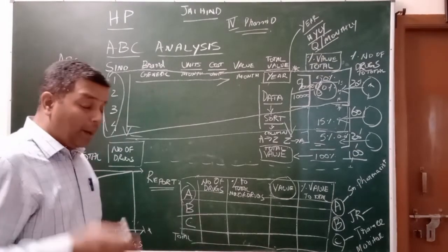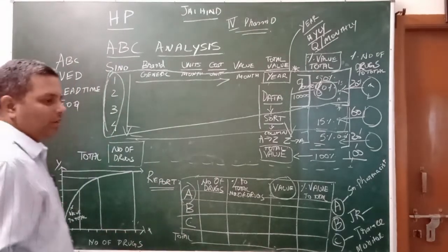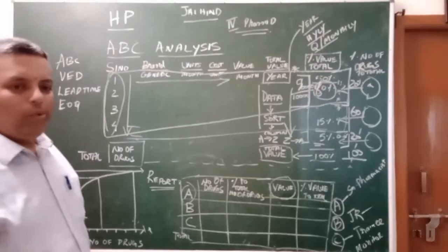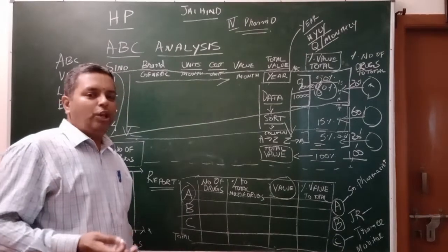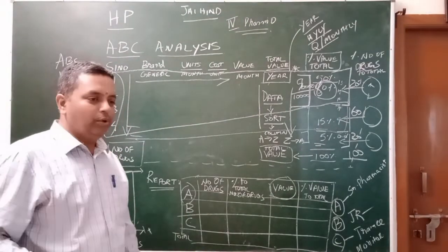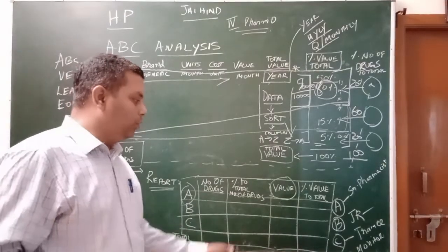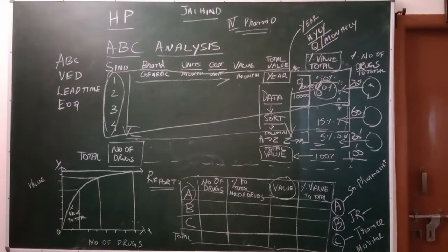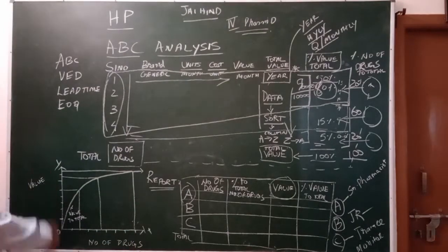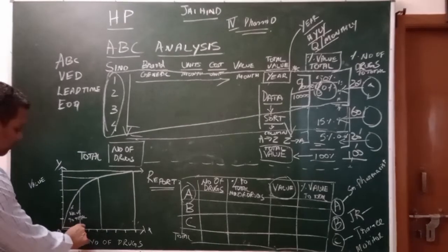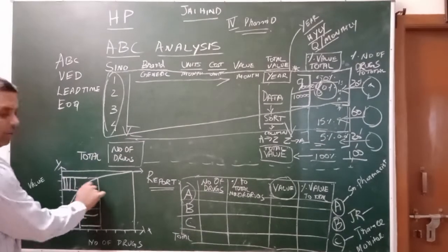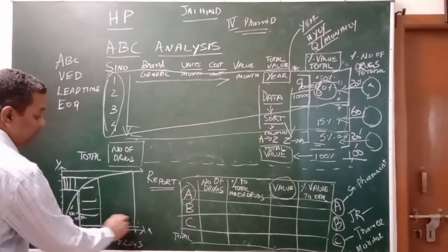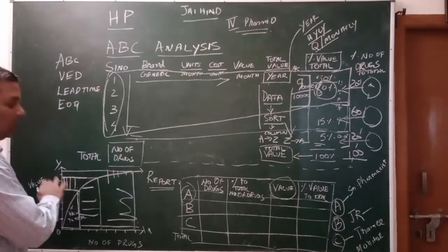High-value drugs (class A) are fewer in number but high in value, and require monitoring by a senior pharmacist. Medium-value drugs (class B) are handled by a junior pharmacist. Class C drugs — low value, more in number — are monitored by trainee pharmacists. Class B represents 15% of value with comparatively more drugs than class A. Class C has even more drugs but very low value.